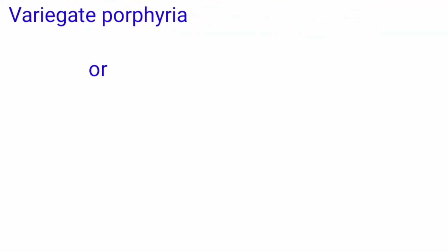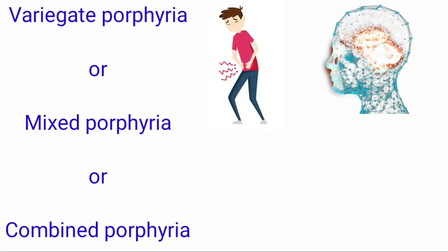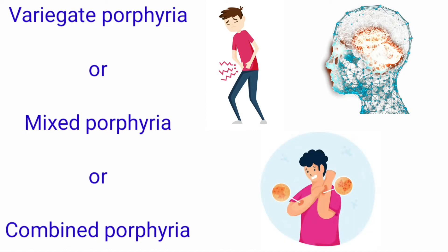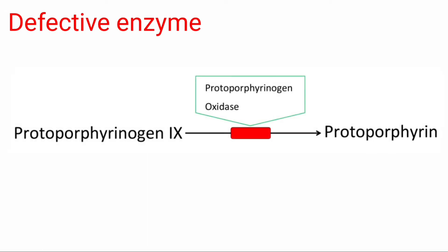Variegate porphyria is also called the mixed or combined type of porphyria. It is called mixed because in this type, abdominal, neurological, as well as cutaneous symptoms are seen. This condition is inherited as an autosomal dominant trait.